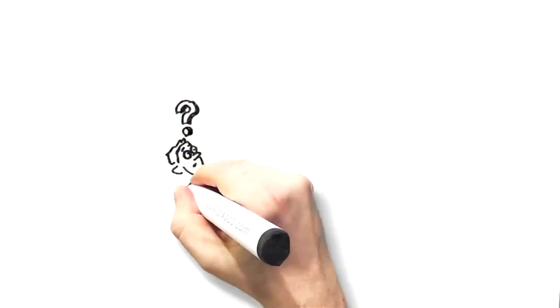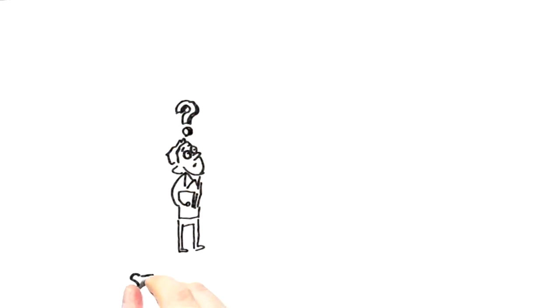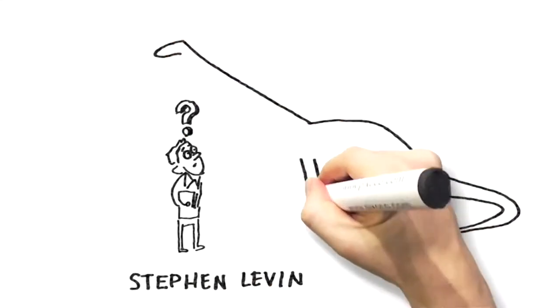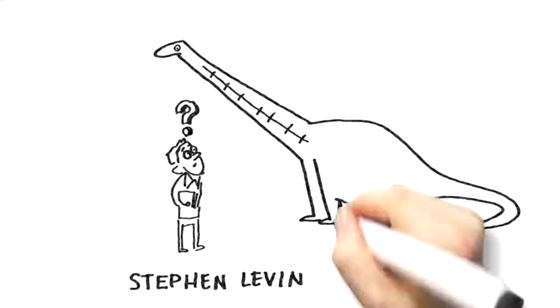At the Natural History Museum in Washington DC, back in the 70s, the orthopedic Stephen Levin saw a giant dinosaur with a very long neck. Suddenly, it hit him.